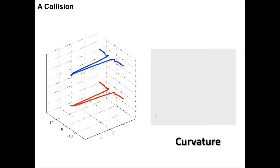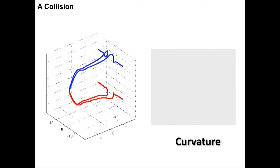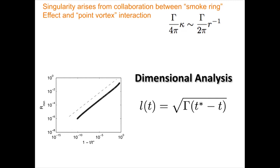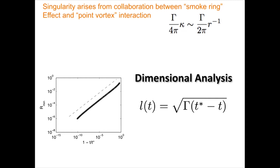So you see these are two things coming together — a red one and a blue one — and the curvature is actually diverging in this solution. It's actually a singularity of the Biot-Savart equations. The problem is that the singularity obeys scaling laws that basically say any scale goes like the square root of time. And one can, as one does, write down similarity solutions and characterize the dynamics.